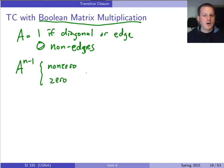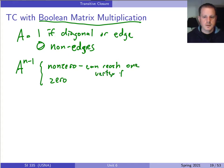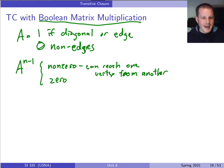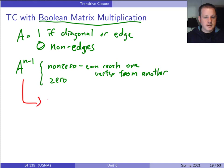We can then raise this matrix to a power. It turns out that A^(n-1) will be nonzero or zero depending on whether one vertex is actually reachable from another. A nonzero entry in this powered matrix means you can reach one vertex from another, and each entry tells us the answer to that reachability query. Any power of A at n-1 or higher will solve the transitive closure problem.